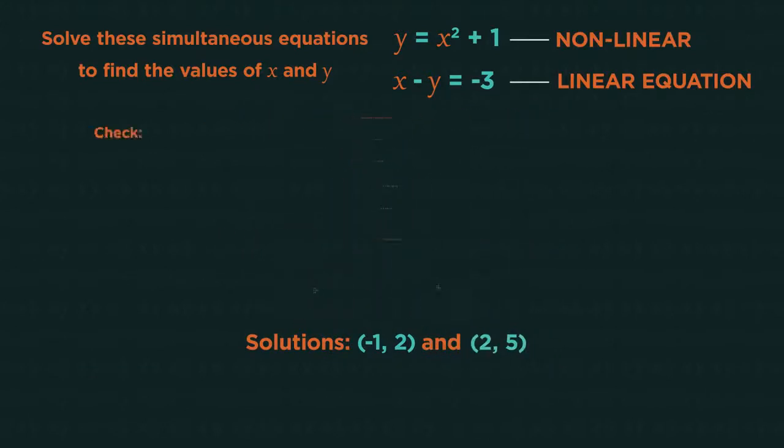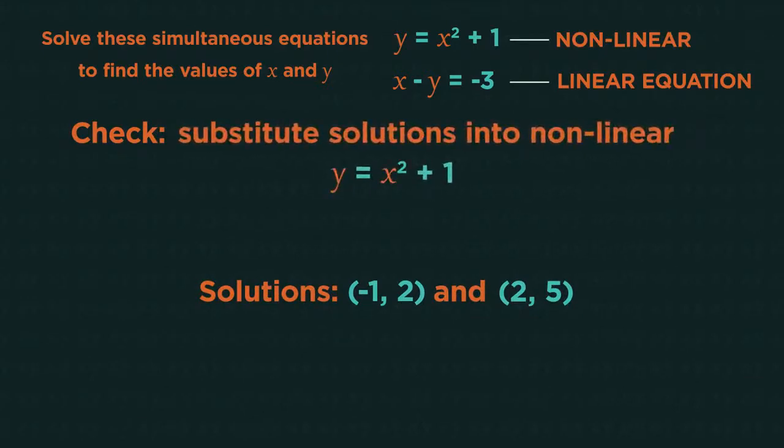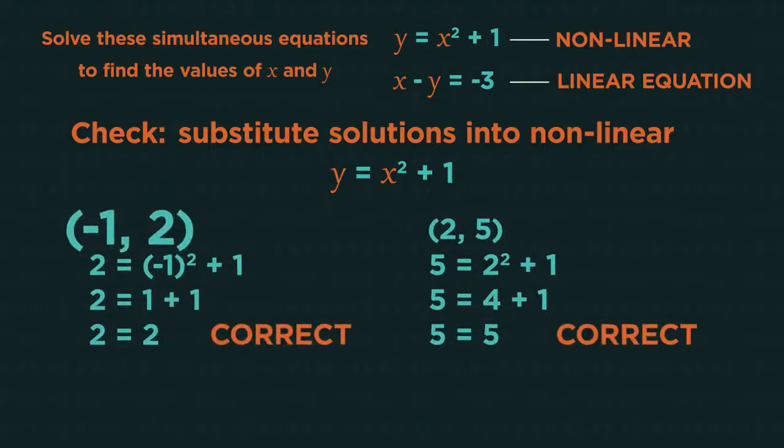As always with maths we should double check our answers. Substitute the solutions (-1, 2) and (2, 5) into the non-linear equation. For (-1, 2): 2 equals (-1) squared plus 1, 2 equals 2, which is correct. And the same for (2, 5).